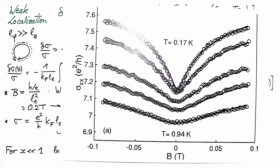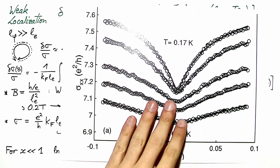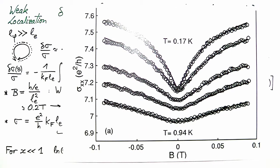In summary, from a measurement of weak localization we can get correct estimates for the coherence length and the elastic mean free path by relatively simple estimations and arguments.